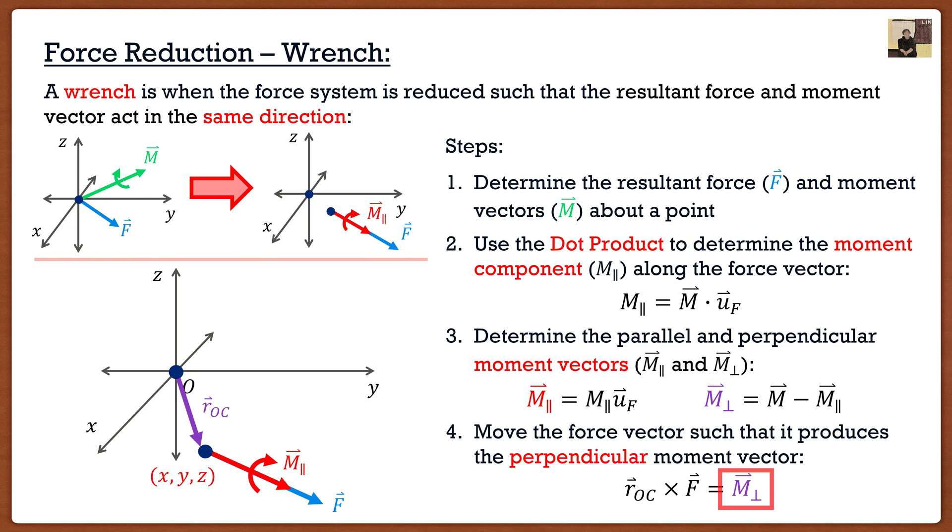In the previous video we wanted to get rid of the entire moment. So we used M as a whole. In a wrench we want to only get rid of the perpendicular component. So in this equation we're only doing the perpendicular component. We are not doing the whole moment. All right so hopefully that makes sense to you guys.